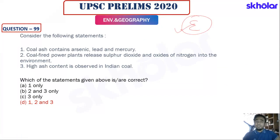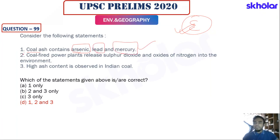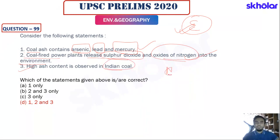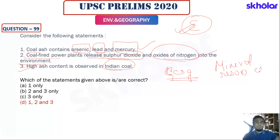The coal ash question is easy. Statement one — coal ash contains arsenic, lead, and mercury — is correct. Statement two — coal-fired power plants release sulfur dioxide and oxides of nitrogen — is correct. Indian coal has high ash content, a fact covered in the geography module on mineral resources in the UPSC Prelims 2020 program.